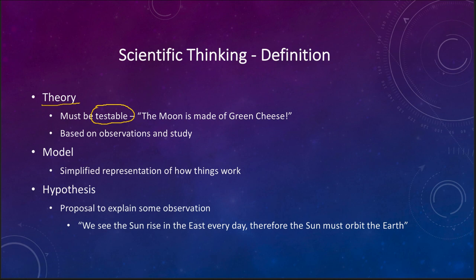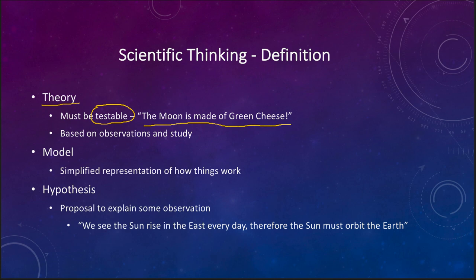For example, saying Einstein was the greatest scientist in history is not testable — it's an opinion. Similarly, saying the Mona Lisa is the greatest painting ever is not testable. An example of a testable scientific hypothesis would be that the moon is made of green cheese. That may sound ridiculous, but it's testable: we could send a probe to the moon, get a sample, and find out what it's made of.